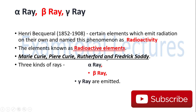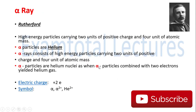Let's see the first kind of ray — the alpha ray. Rutherford observed that alpha rays are high energy particles with two units of positive charge and four units of atomic mass. So the charge is two positive, and the atomic mass is four. Rutherford concluded that alpha particles are helium nuclei, because when alpha particles are combined with two electrons, they yield helium gas.